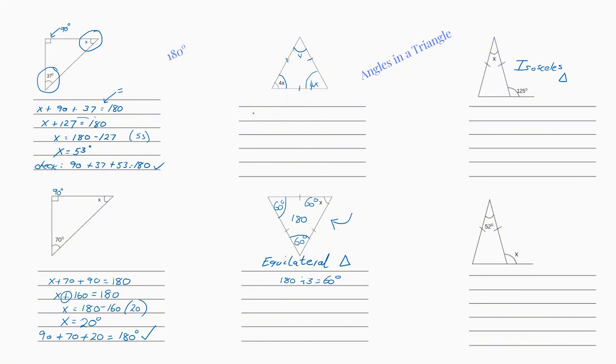So now we're going to do 4x plus another 4x plus x. Because we don't know what x is, do we? And it all equals 180 degrees.